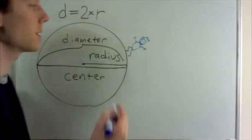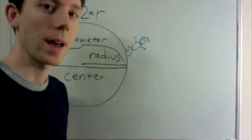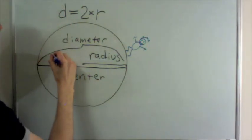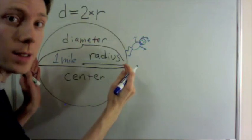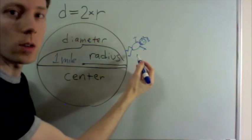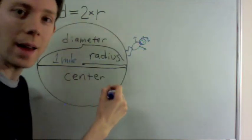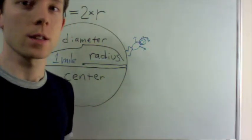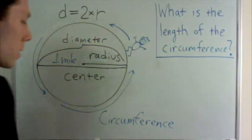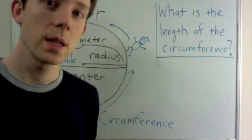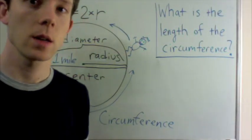Pretend like this is the satellite image of a running track, and we know the diameter is 1 mile all the way across. How far is someone going to run if they run around the track? The length around the circle is called the circumference. You can always figure out the circumference by knowing the radius or the diameter. I'll tell you how in a moment.